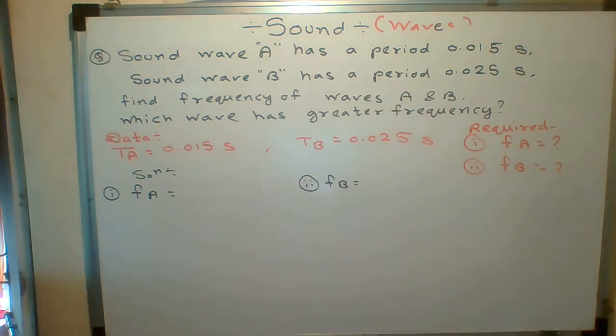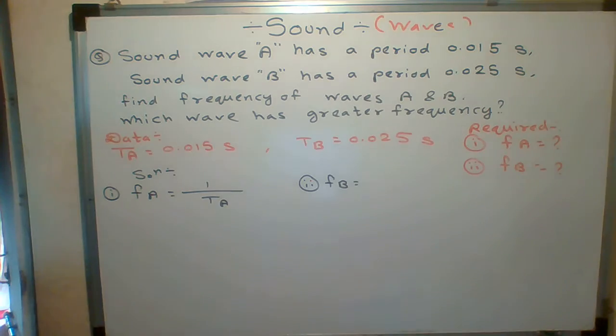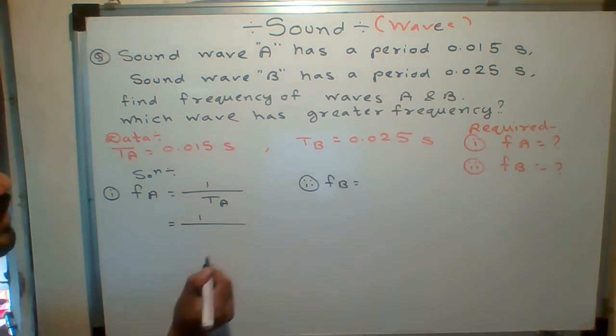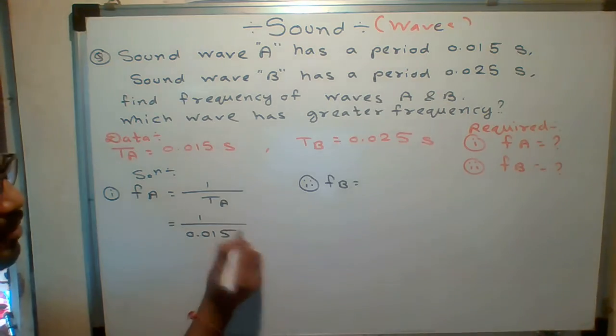Okay, I will solve for both. For frequency A, the formula is what? 1 upon period of A. Simple formula. 1 upon period of A. What is period of A? 0.015.